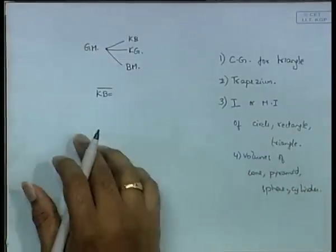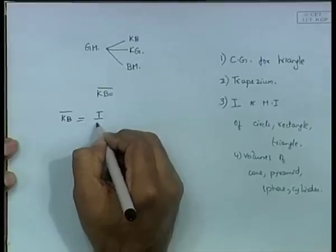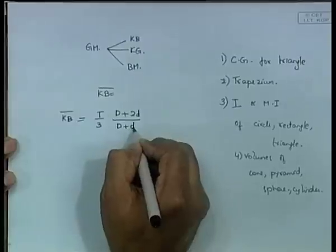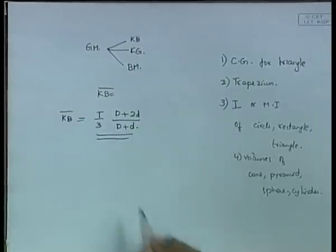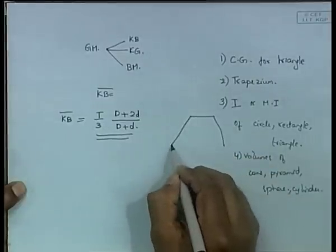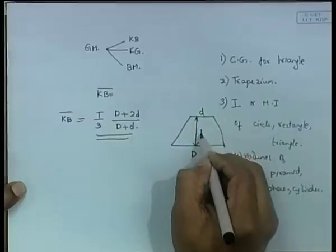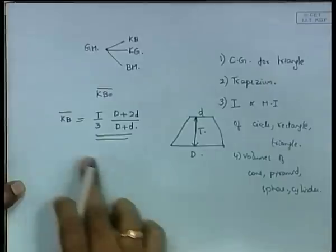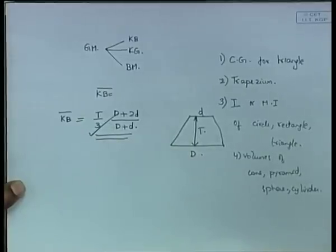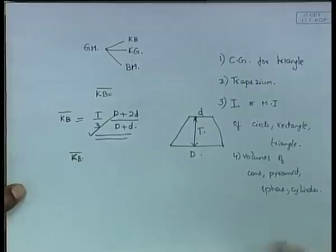There is no way to derive the trapezium centroid formula - you just have to remember it. Once you have it, you get the value of KB for this trapezium. For the exam these standard formulas I would not give you; you have to memorize them. KB you get from the trapezium centroid expression, then next you calculate BM.